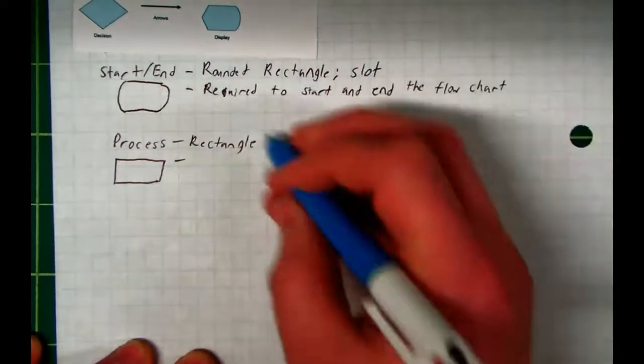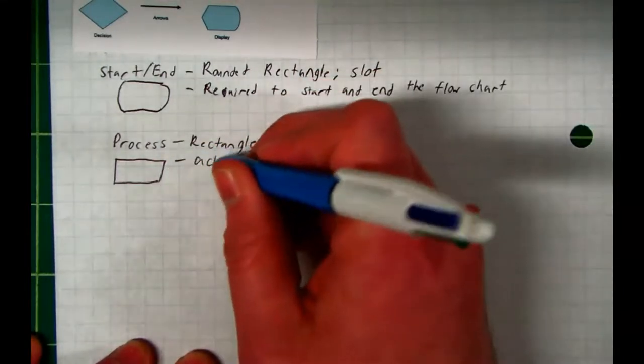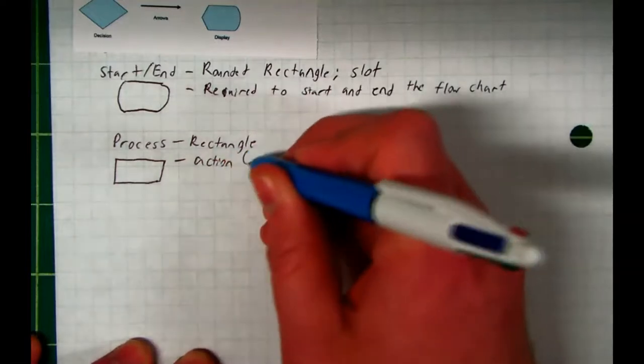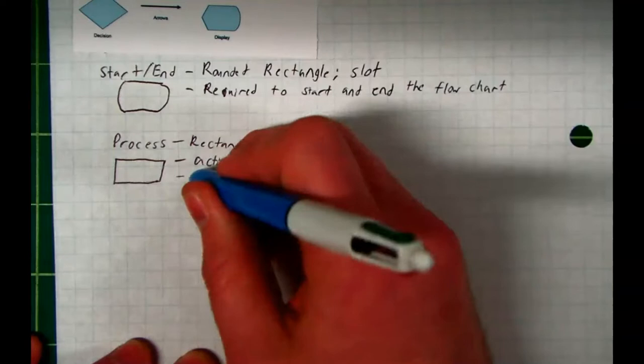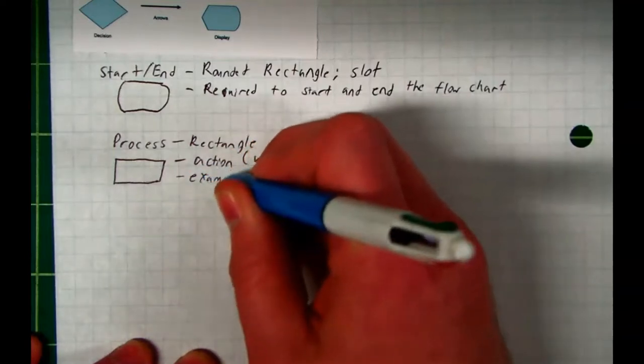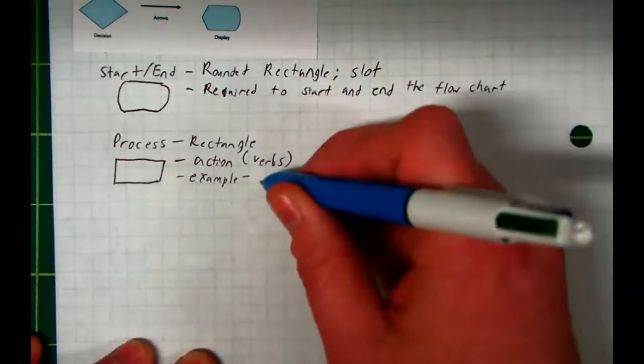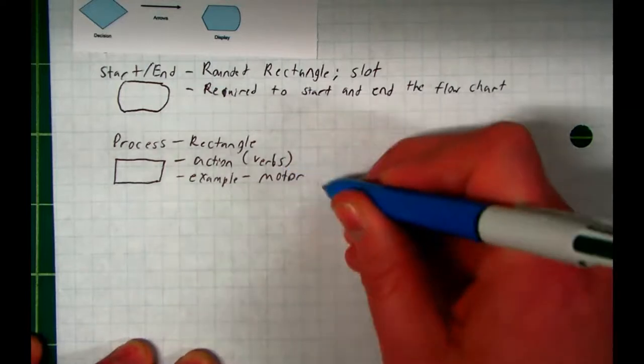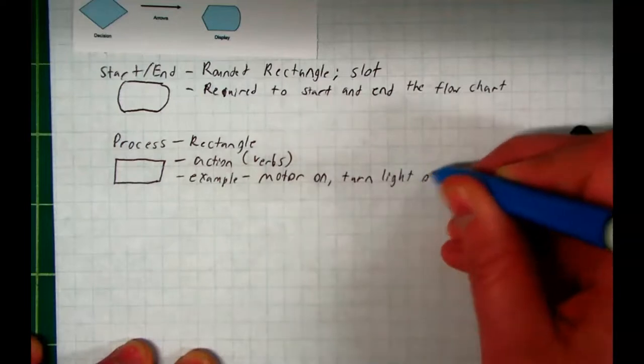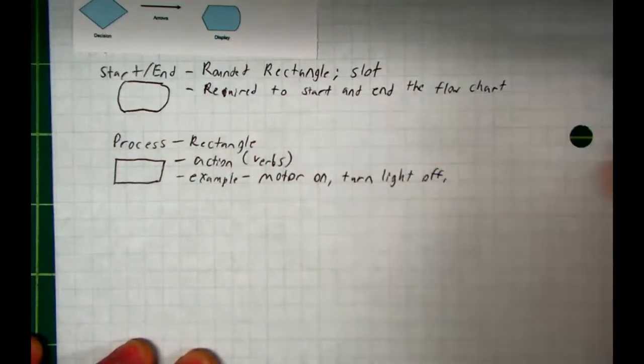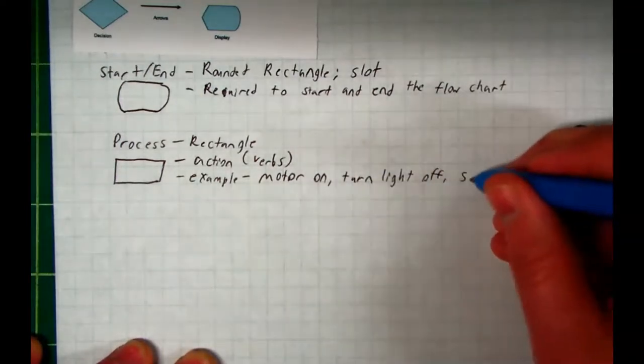Processes in flowcharts are essentially just actions. You can think of them as verbs. An example of a process? Turn the motor on, turn a light off, or produce sound, or speak.